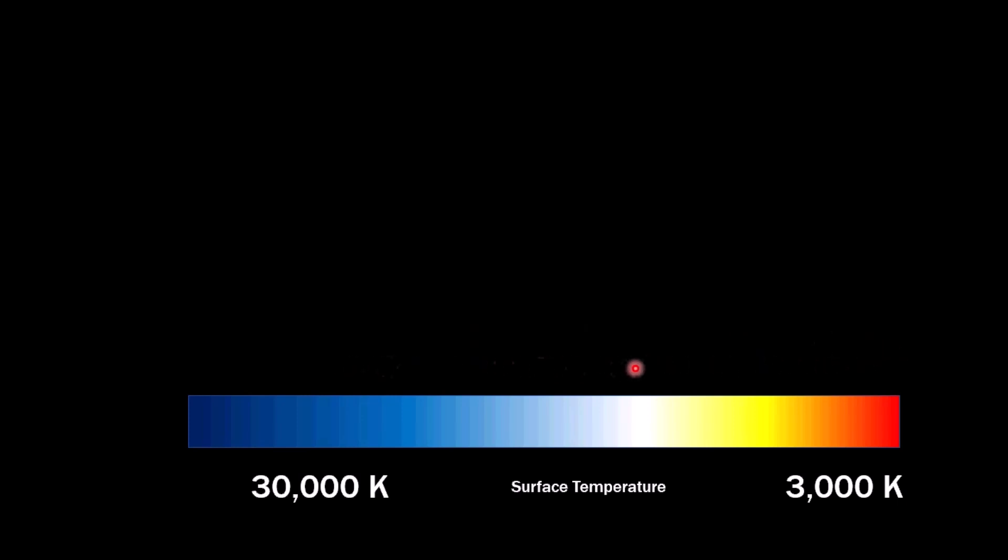You can see it goes through the colors of the rainbow, except green. Green is replaced with white, but for the most part, in rainbow order, from 3,000 Kelvin all the way to 30,000 Kelvin, the surface temperature of the star.